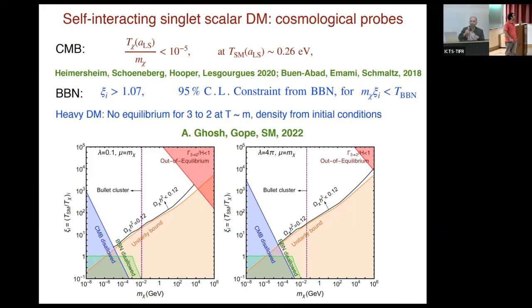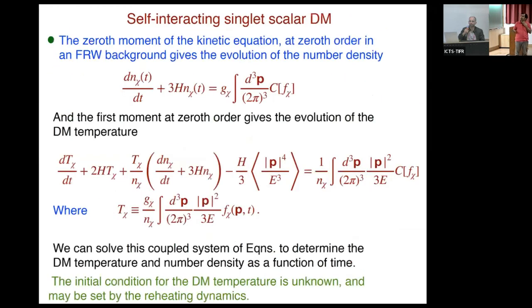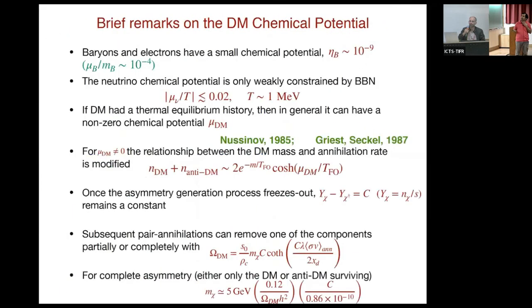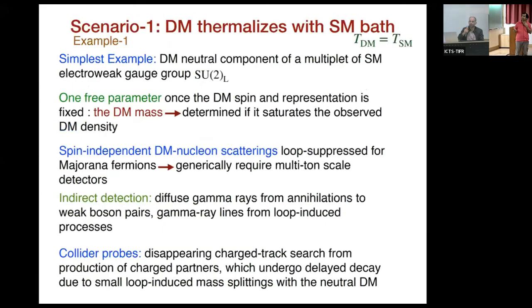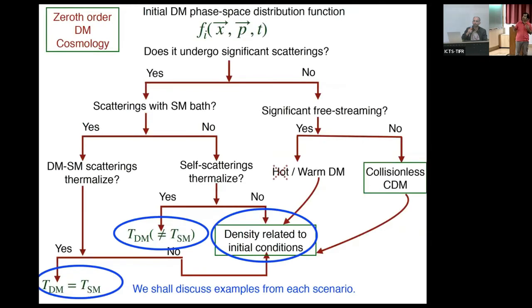Another question asked where axion-like particles or ultralight dark matter candidates fit in the framework. The speaker confirmed they fall in the cold, collisionless box: they don't undergo significant scatterings and don't have significant free-streaming. How their initial phase space is populated is more complicated, but they definitely belong in that category. At the simulation level, however, they are very different because they are wave-like and can form solitonic cores.